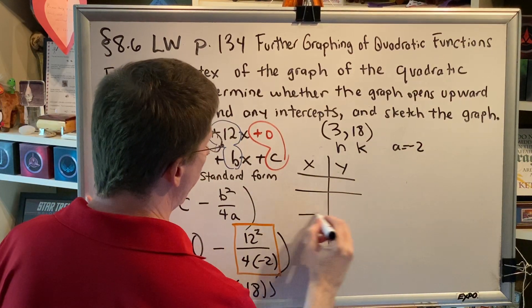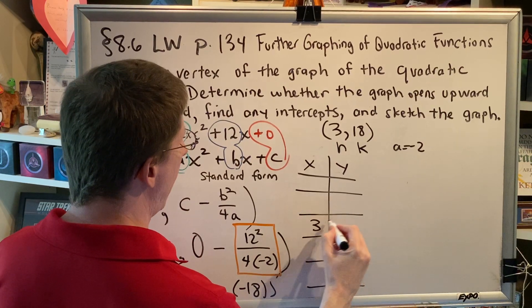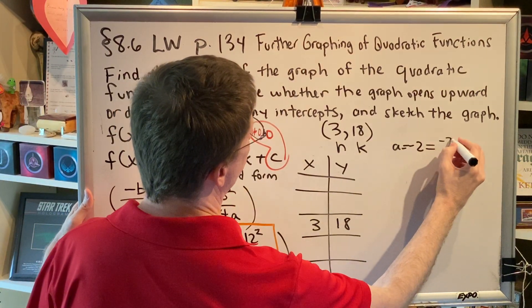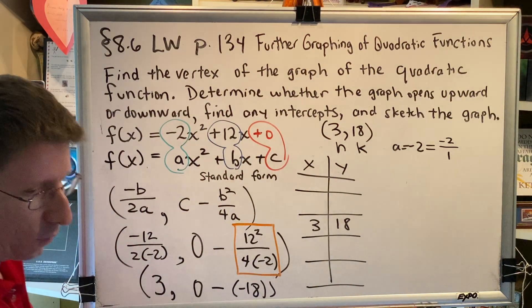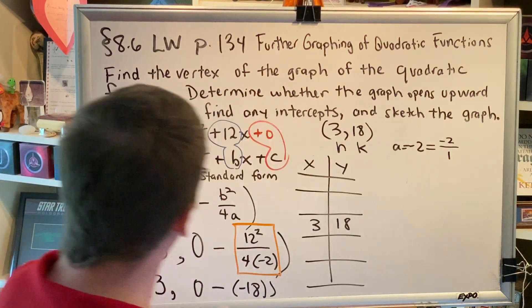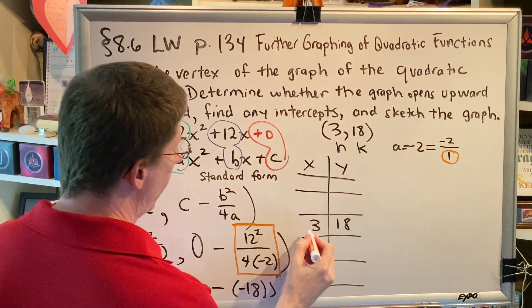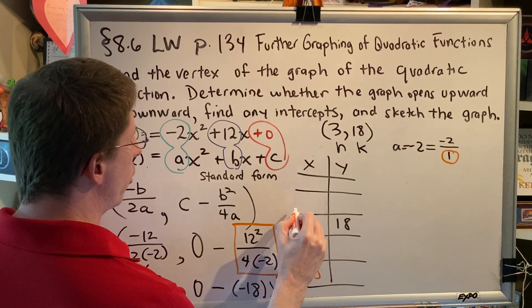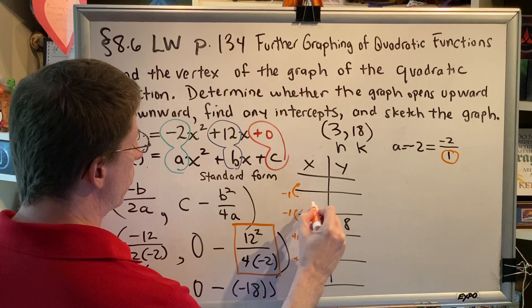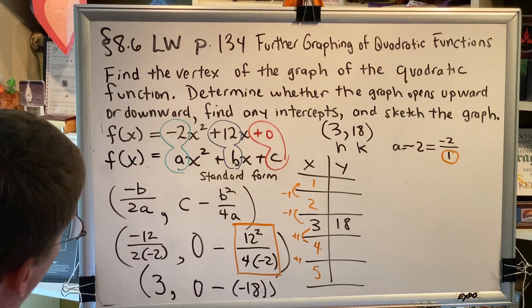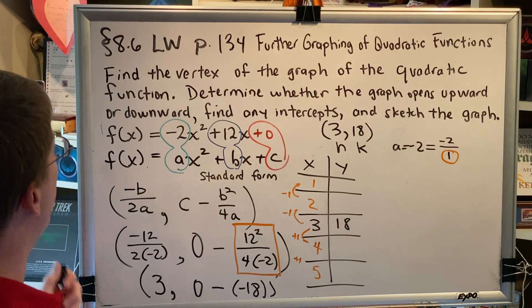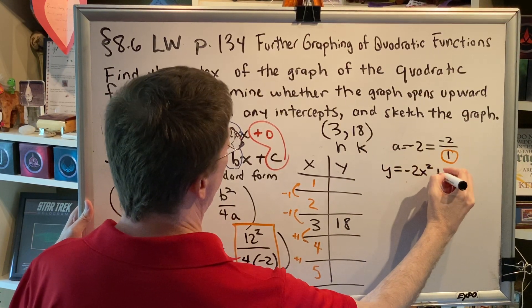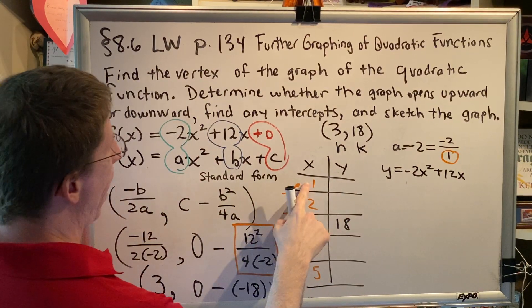Whenever we graph parabolas, we always put our vertex in the middle row of our table. So, the (3,18) goes here. To find the other x's, we need to use the denominator of a. Well, a is an integer. It's just negative 2. So, to write that as a fraction, we need to write it as -2/1. And then, this denominator value here, this 1, tells me how to find all of my other x values. So, 3 plus 1 is 4 plus 1 is 5. Going the other direction, we subtract 1. 3 minus 1 is 2. 2 minus 1 is 1. So, now we have all of our x's. To get our y's, we plug into our equation. F(x) is the same thing as y. So, our equation is y = -2x² + 12x.